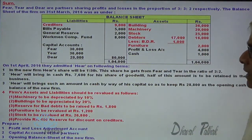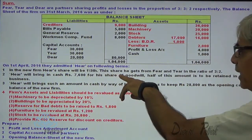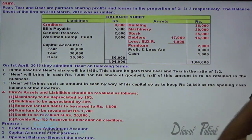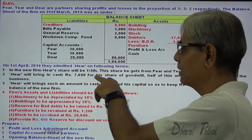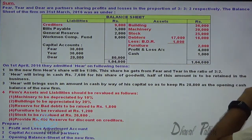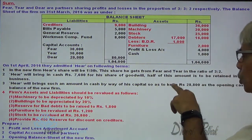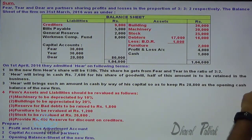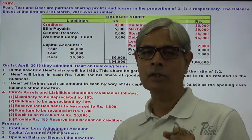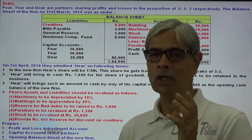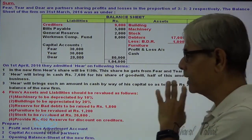On 1st April 2016, they admitted Year on the following terms. In the new firm, Year's share will be 1/5th. This share he gets from Fear and Tear in the ratio of 3:2, so the sacrificing ratio is 3:2. Year will bring cash ₹7,600 for his share of goodwill, and half of this amount is to be retained in the business.